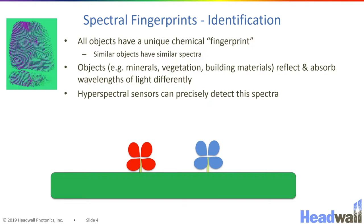In order to grasp the power of combining imaging and spectroscopy, it's important to have a basic understanding of spectroscopy and how it can be used to differentiate objects or even do things as powerful as quantitation or chemical abundance determination. So all objects will absorb and reflect light in a unique way.